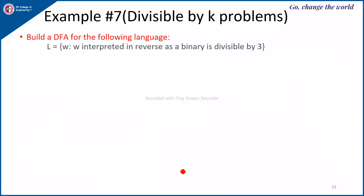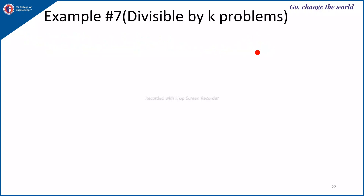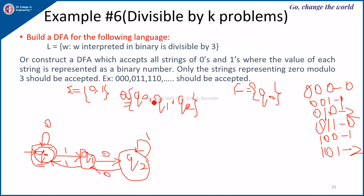Next, design a DFA for the language L where W interpreted in reverse as binary is divisible by 3. This is the same as the previous problem, but the string is read in reverse order. For the same machine, you keep the start state and final state the same.